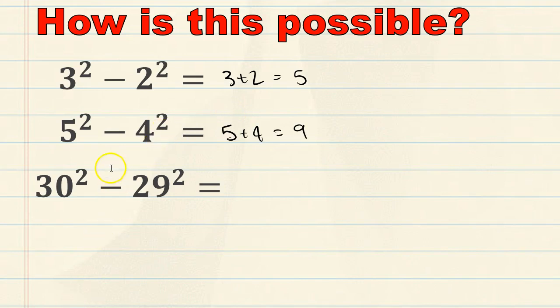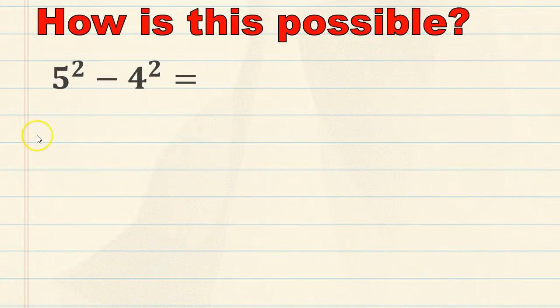Now, I promised you that I would use some diagrams to show you why this works. So, let's just take 5 squared minus 4 squared. What does it mean to square 5 and to square 4?